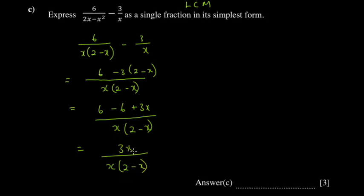What you now realize is that x is a factor in both the numerator and the denominator, so those cancel out. Your final answer is 3 over (2 minus x).